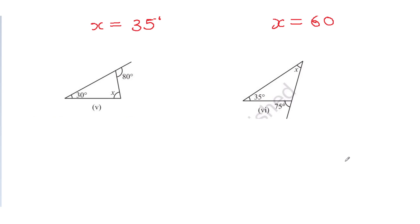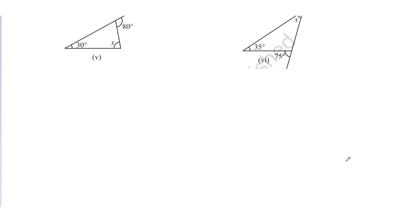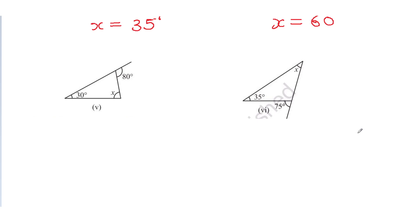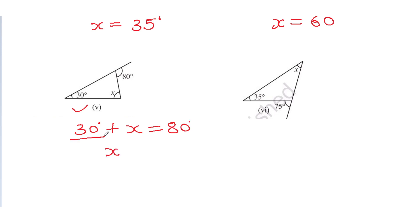Now let's look at the fifth figure. Using the formula: 30 degrees plus x — these are the two interior opposite angles — is equal to 80, which is the exterior angle. To find x, transfer 30 to the right-hand side as minus: 80 degrees minus 30 degrees. So x is equal to 50 degrees.